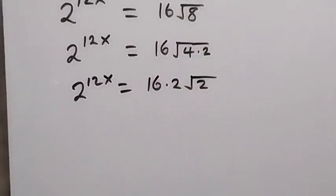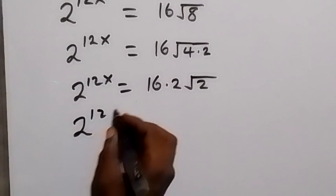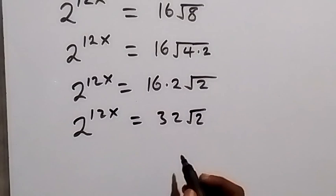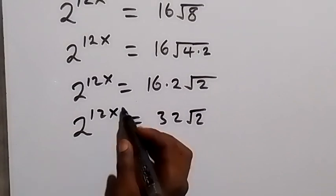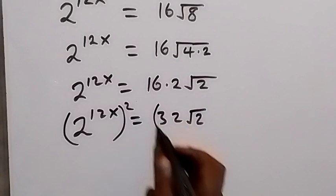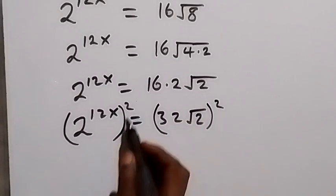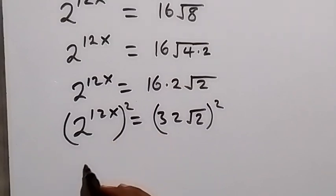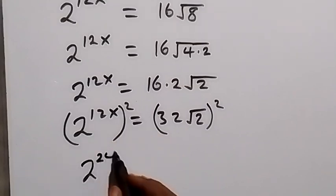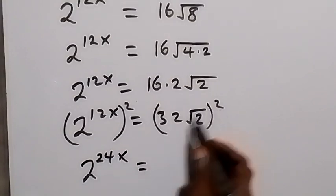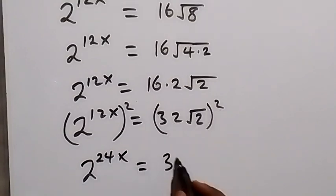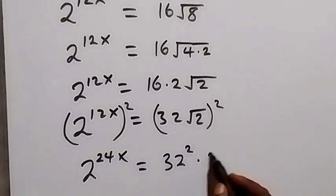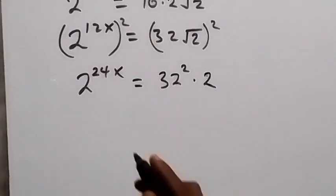So we have 2 raised to power 12x equals 32 root 2. Now we square both sides again — we square this side and also square this side. The power multiplies to give us 2 raised to power 24x. On the right side, we have 32 squared times root 2 squared — the square cancels the square root, giving us 32 squared times 2.